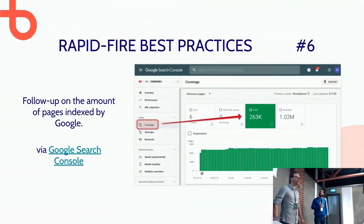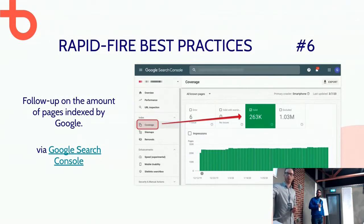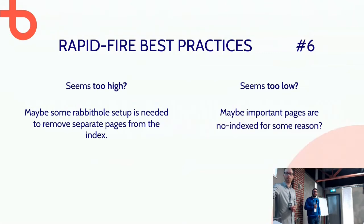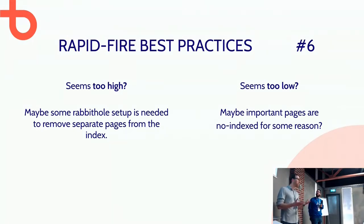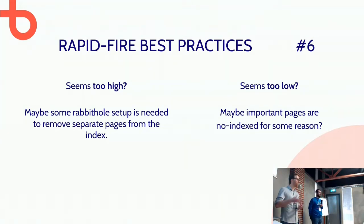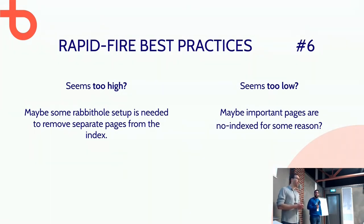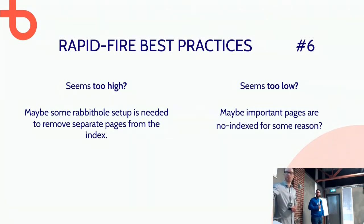You can follow up on the amount of pages indexed by Google in Google Search Console. In this example, Google has 263k pages in the index — you might think that's too high if you only have 10,000 pages. Maybe some pages shouldn't be indexed, like separate nodes, search result pages, or anything not set to noindex. It could also seem too low — if your website has 1,000 pages but only 50 are indexed, maybe a noindex was accidentally added during a deployment, which has happened to a lot of projects. When you update your website, always check these things.